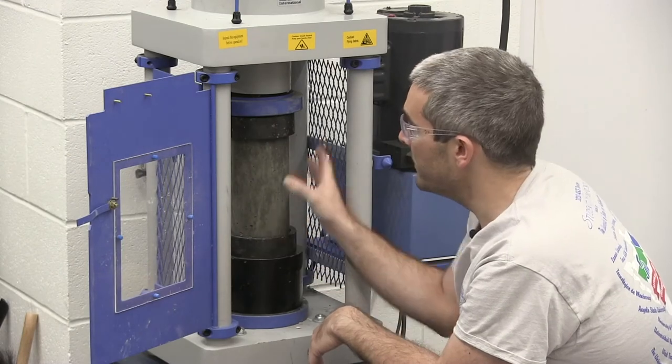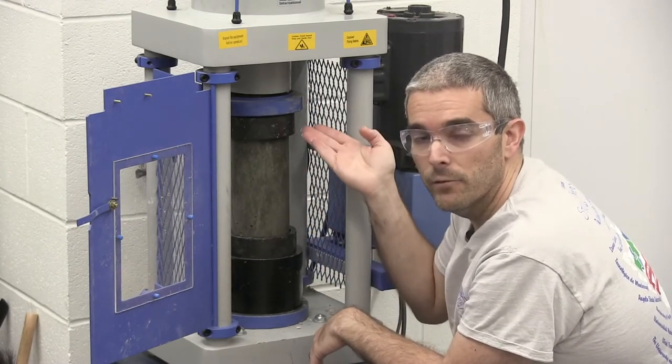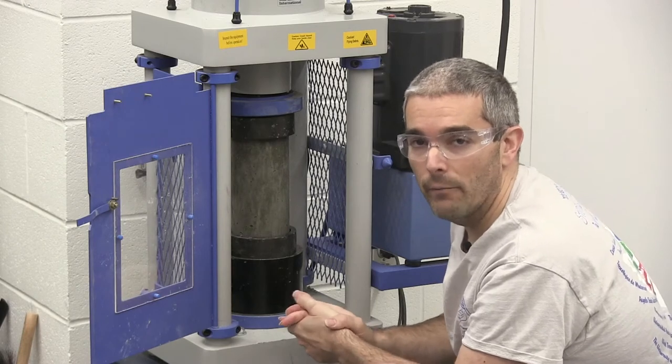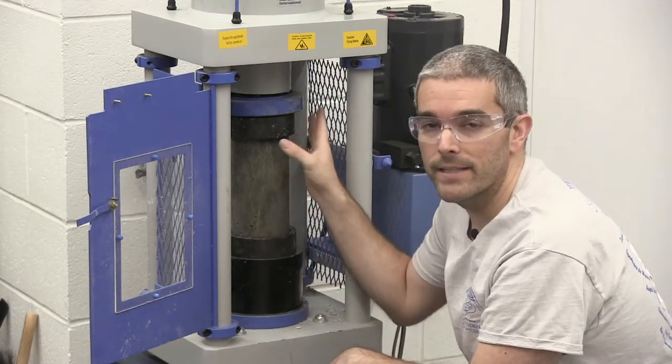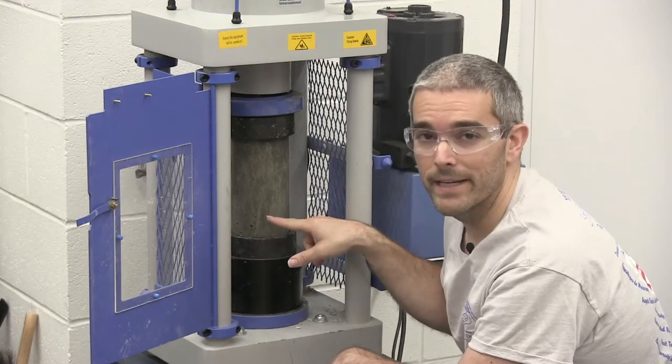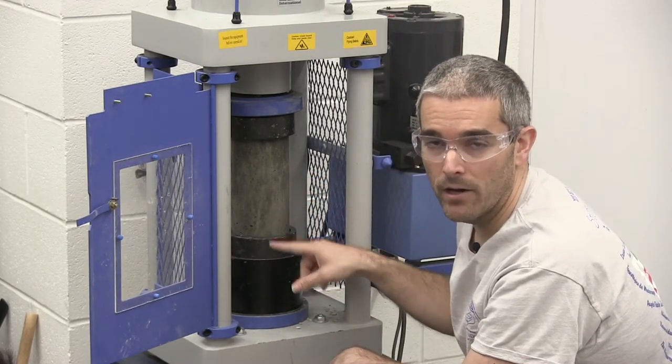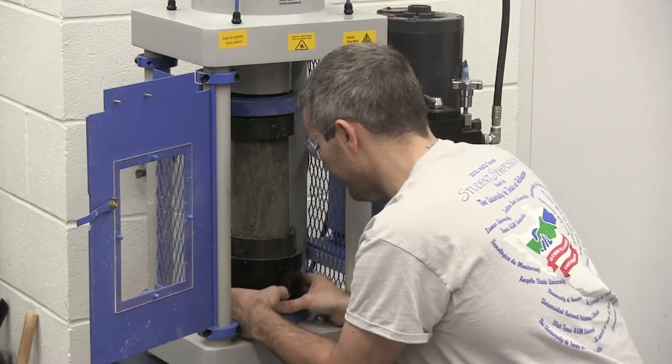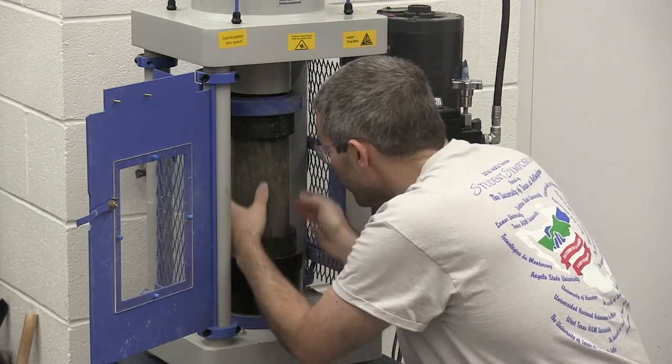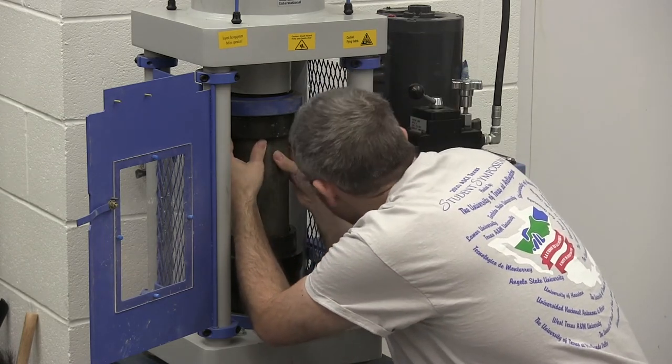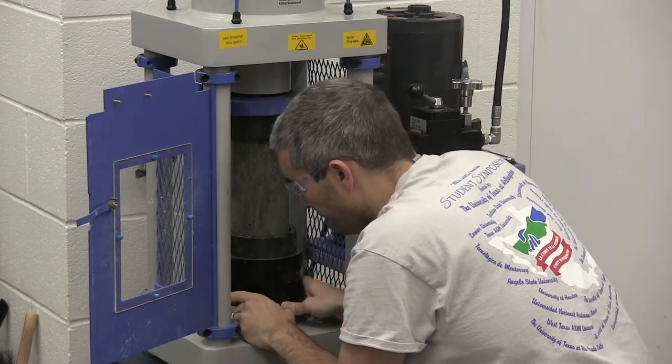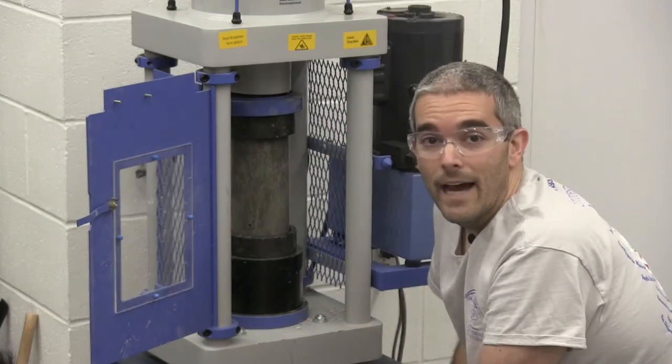Now before we're ready to test we want to make sure that the top crosshead is all in the fully retracted position, and I'll show you how to do that in a second. And then we want to make sure our cylinder is in there as straight as we possibly can. We don't want to put it in there crooked, otherwise it'll cause like a bending moment in our machine and could cause damage to our machine. So basically all of these circular pieces should be concentric. Making sure the cylinder is concentric in the rings, the rings are on, everything's nice and flat. Now we're ready to get started on the test.